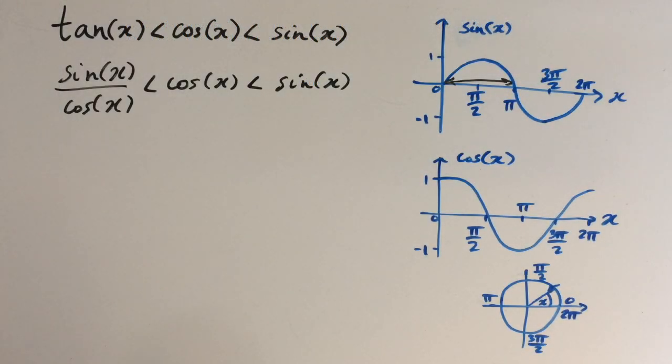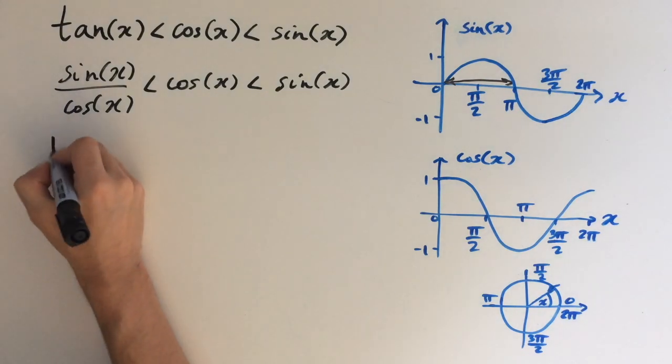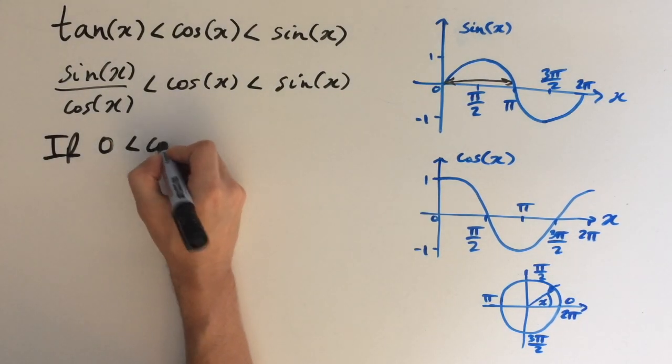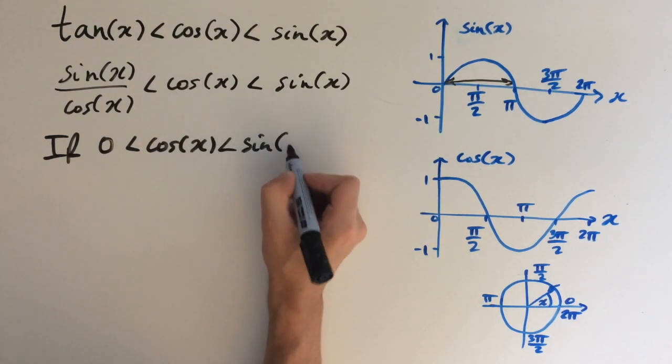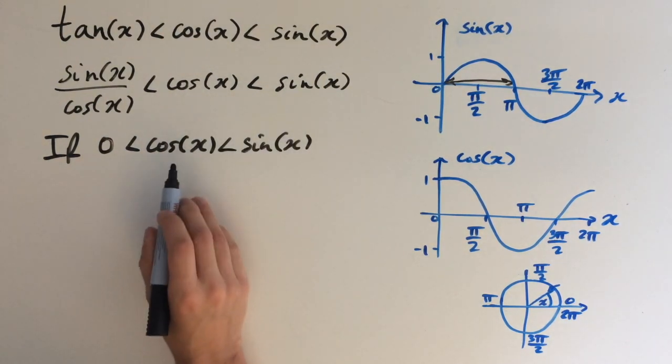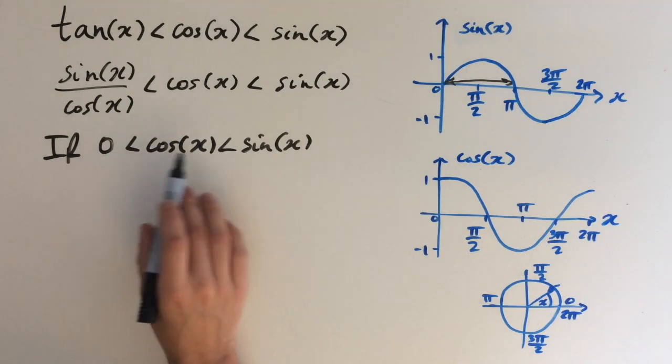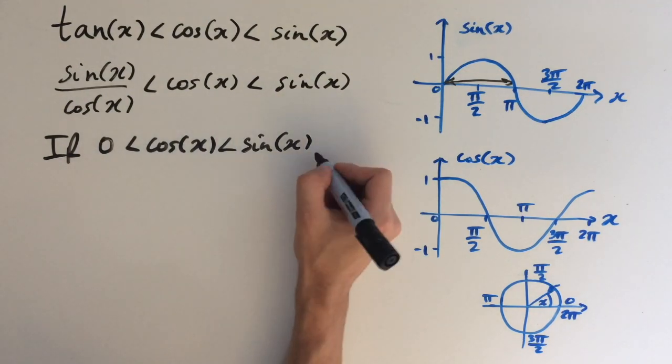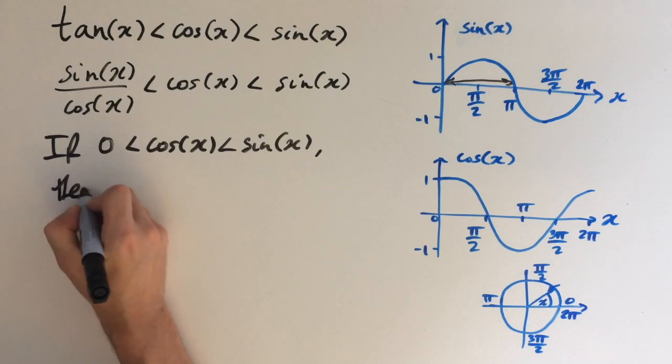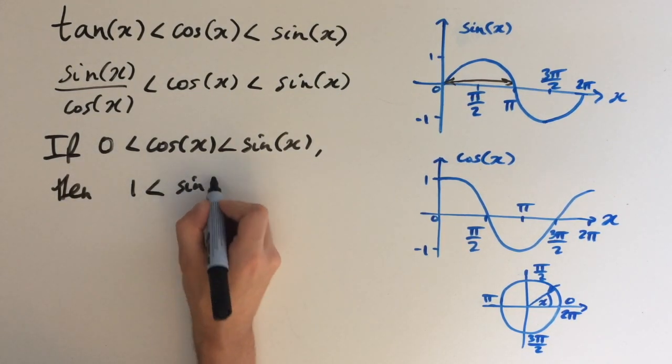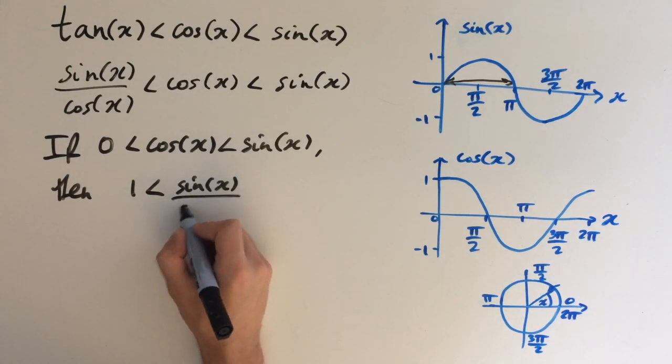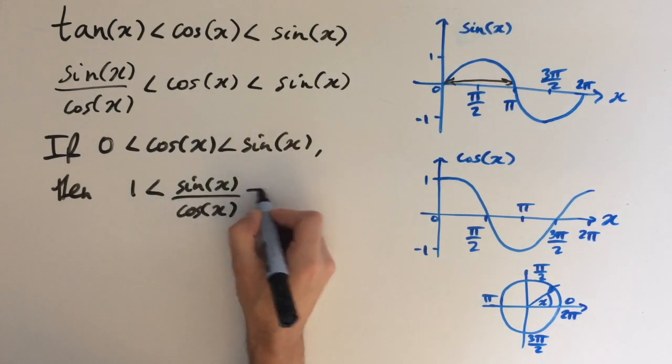Now let's suppose cos(x) is positive. If 0 < cos(x) < sin(x), then we can divide through by cos(x) without changing the sign of the inequality. So then we get 1 < sin(x)/cos(x) = tan(x).